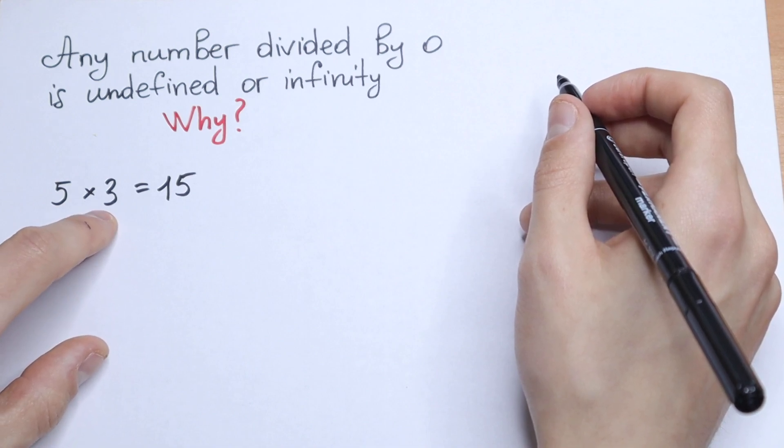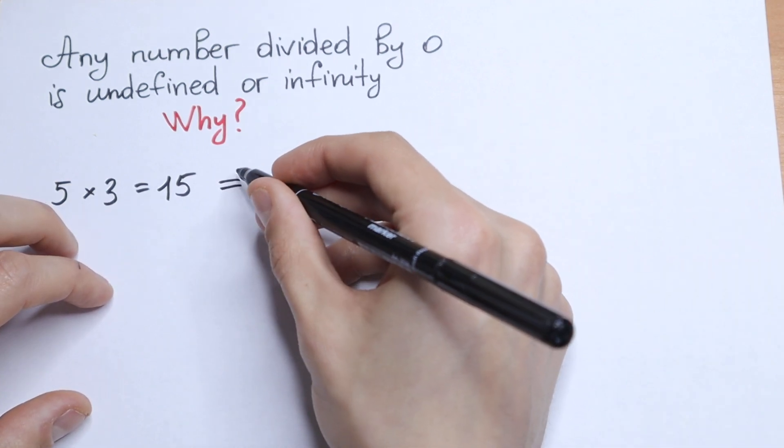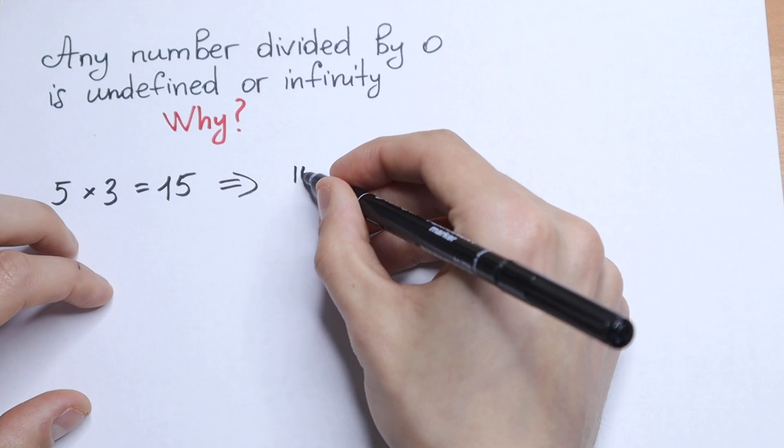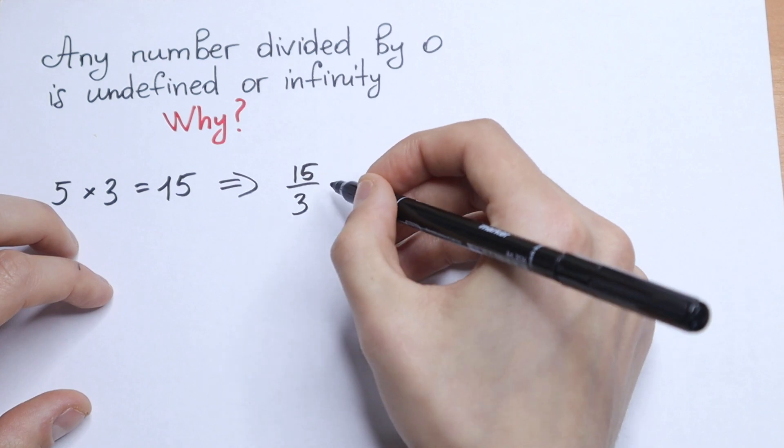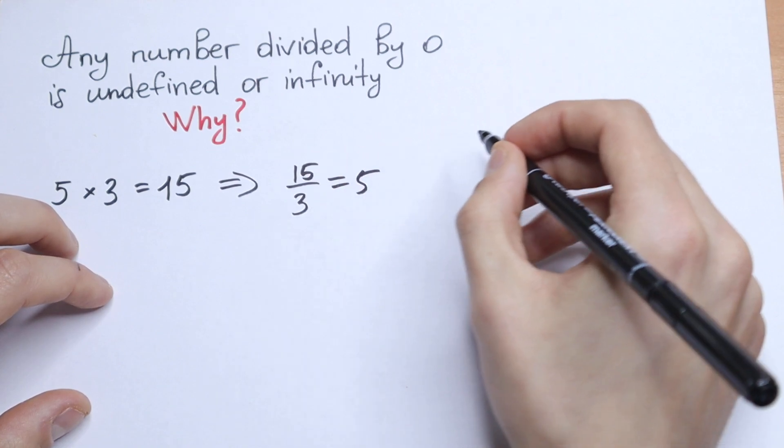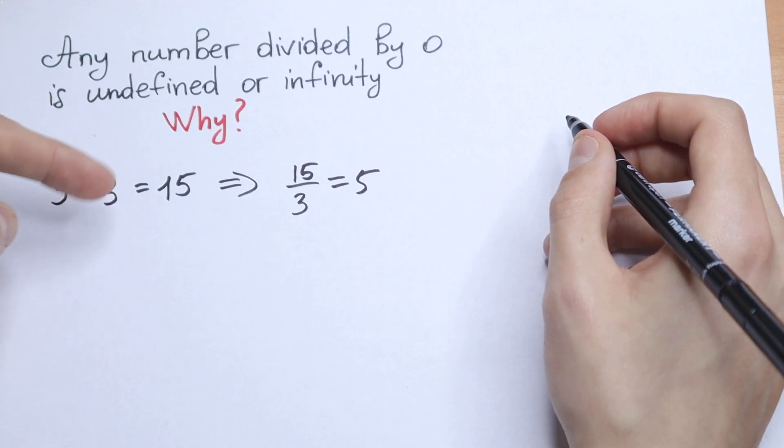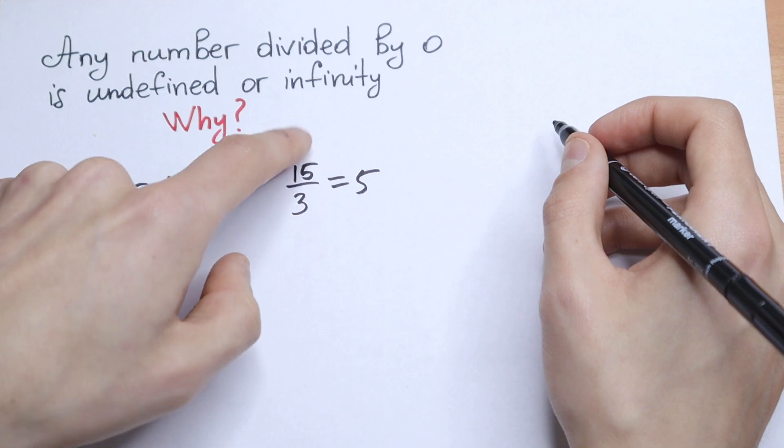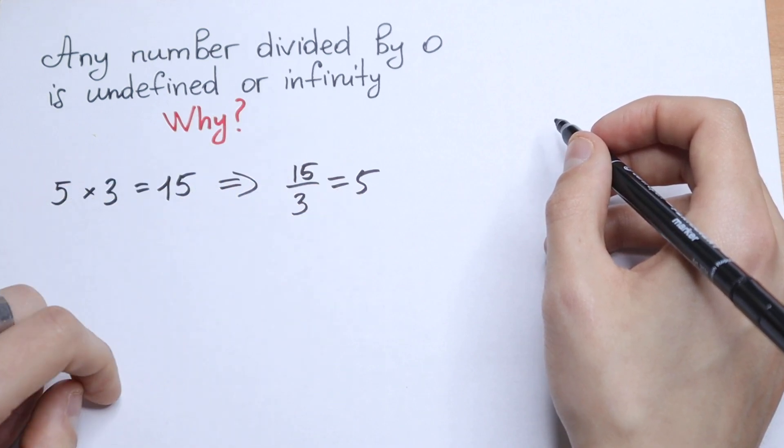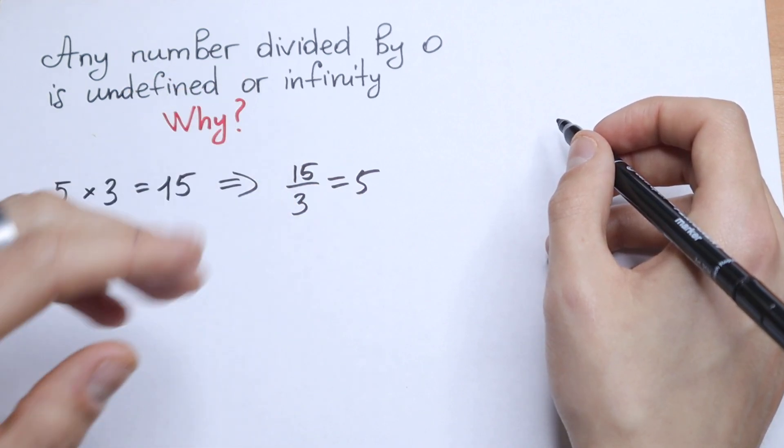And let's divide both sides by 3. As a result, we will have that 15 divided by 3 is equal to 5, which is correct. This is a classic trick, dividing both sides by 3. We will have 15 divided by 3 equal to 5. So why do I write this in this case?